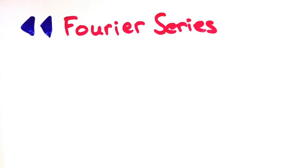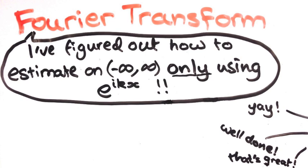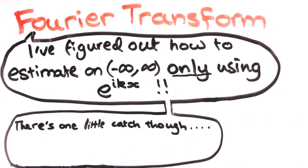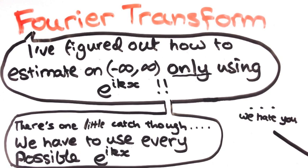If we think back to the Fourier series, we only needed to use exponentials with certain values of k. Unfortunately, that's not the case if we want our estimates to work on the whole real line. We need to consider the exponentials with all possible k values.